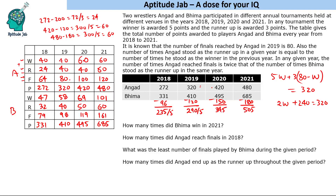Now answering the questions: How many times did Bhim win in 2021? Answer: 101 times. How many times did Angad reach finals in 2018? Answer: 64 occasions. What was the least number of finals played by Bhim during the given period? Answer: 79. How many times did Angad end up as runner-up throughout the given period? Adding all runner-up values gives 100 plus 64 equals 164. That's the solution to this set.